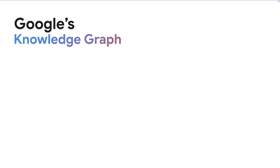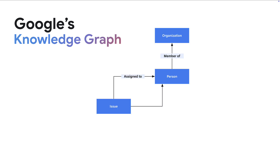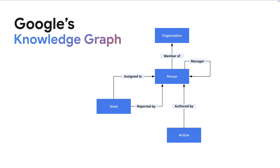A knowledge graph represents relationships between things. For example, a person is a member of an organization, an issue can be assigned to or reported by a person, an article can be authored by a person who might be another person's manager, and so on. Having these relationships mapped out really helps improve the relevance and quality of search results, which is partly why Google Search is such a great search engine. You get to benefit from that knowledge graph when you use the Agent Space default search agent.